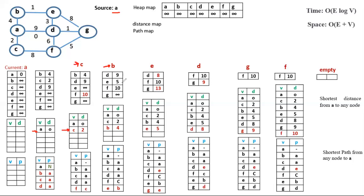From the remaining vertices, the vertex with minimum distance is E, so the current node is E with distance 5. The nodes connected to E in the list are D and G. The distance of D is currently 9. The new distance via E is 5 plus 3 equals 8. Since 8 is less than 9, we relax D to 8 and update its parent from A to E. We also relax G to 5 plus 8 equals 13 and set the parent of G to E.